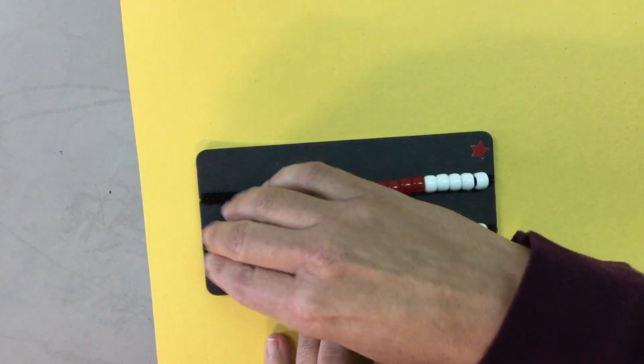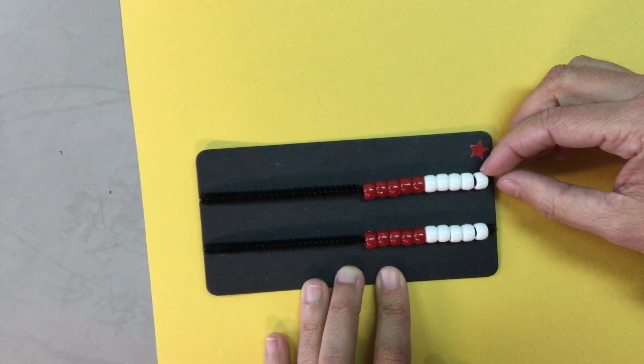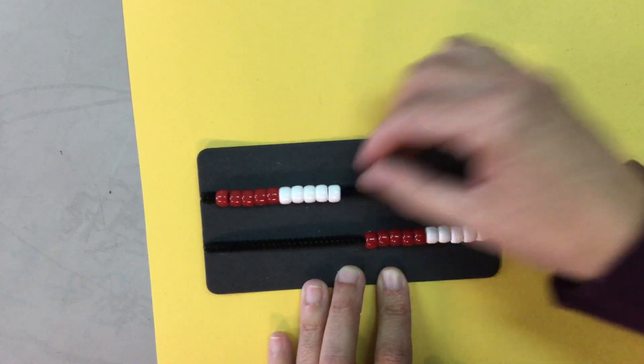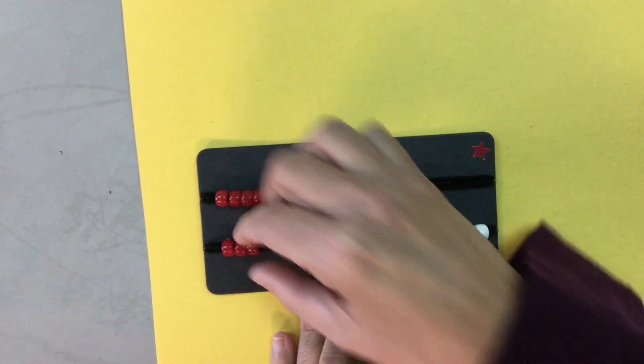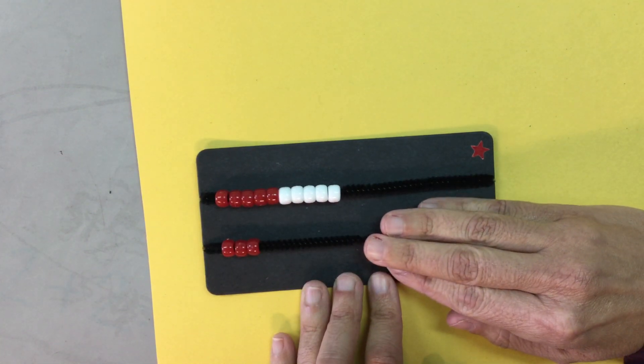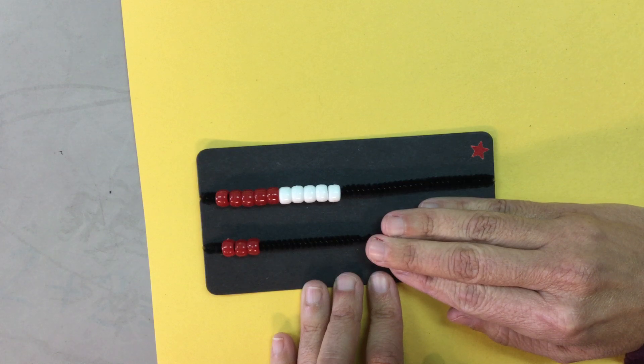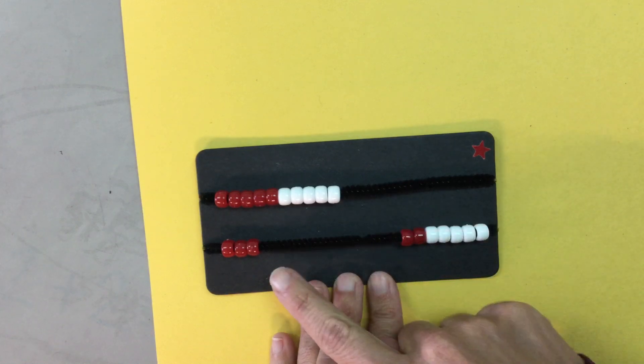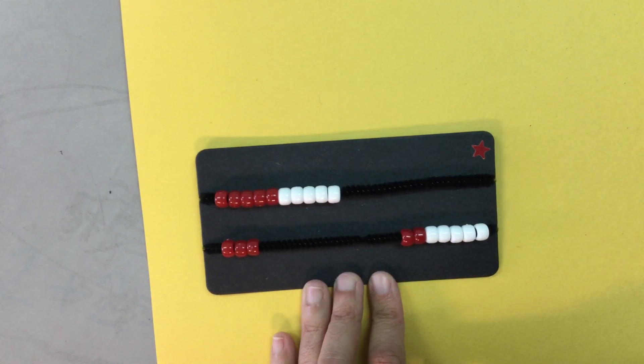Another example would be if I pushed 13 beads. So I'm gonna push 10 beads and three more. There's my 13 and I could ask how many are hiding to make 20. So I know that there are seven beads that are hiding because 13 plus 7 is 20.